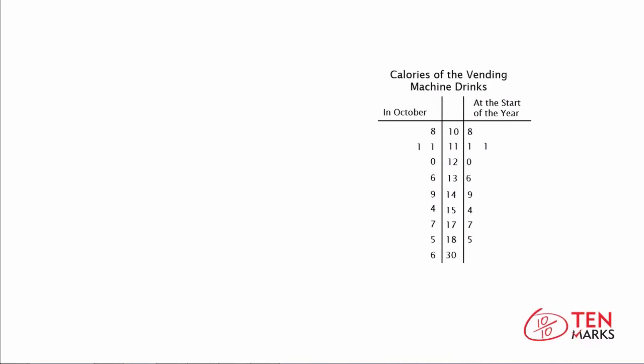Here's the plot. This stem and leaf plot looks a little bit different than the one we discussed in the intro, because two different data sets are being compared side by side. The first data set, highlighted in yellow, shows the calories in each drink in October. The next data set, highlighted in blue, contains the calories in each drink at the beginning of the year. The stem becomes this middle area, the leaf for one data set is on the left, and the leaf for the other data set is on the right.